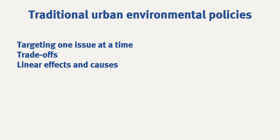Another shortcoming from traditional policies is that they assume that resource use and pollution emission drivers have a linear effect on consumption and pollution. In addition, the environmental impacts from this resource use and pollution are considered to be linearly linked. However, this assumption greatly underestimates how feedback loops and rebound effects can affect our consumption and environmental impact.